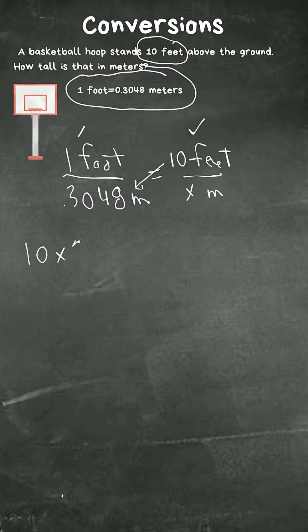So now let's do a cross product: ten times 3048 ten-thousandths equals one times X. Let's call that X.